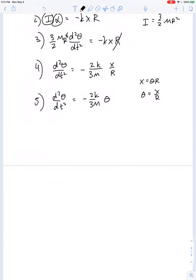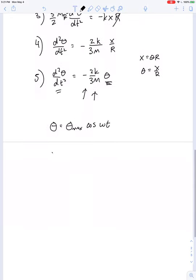What sort of function can I take the second derivative of so that I get back a negative constant times that original function? So what's a good guess in this case? Yeah, we're going to guess that theta is equal to theta maximum cosine omega t. So if that's true, the second derivative of theta with respect to time would be equal to negative omega squared theta max cosine omega t.